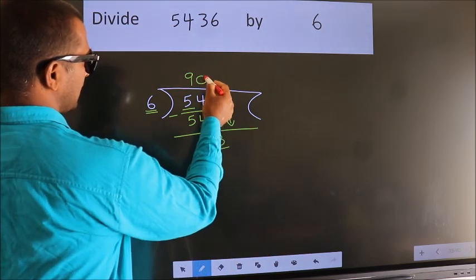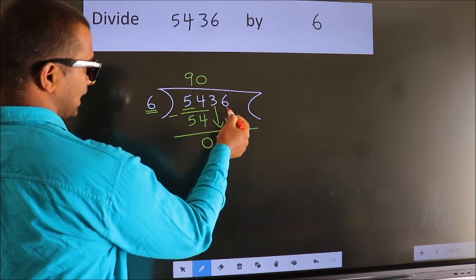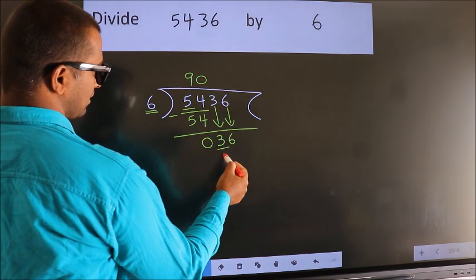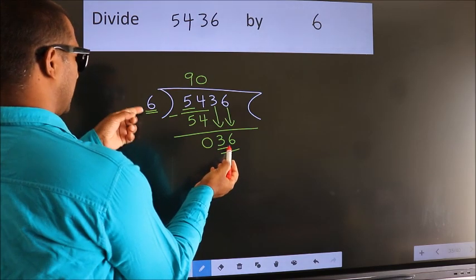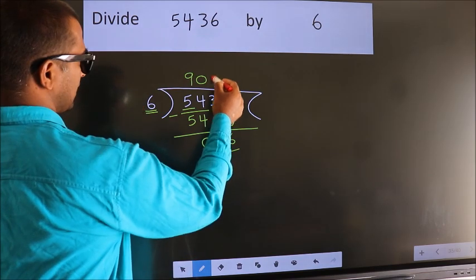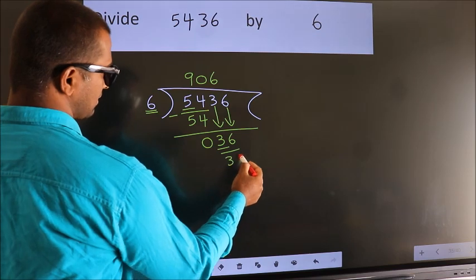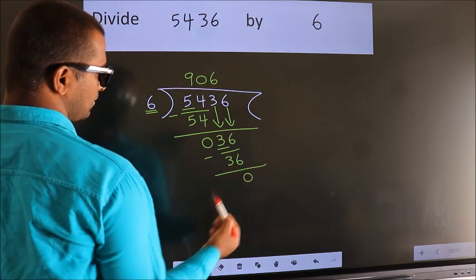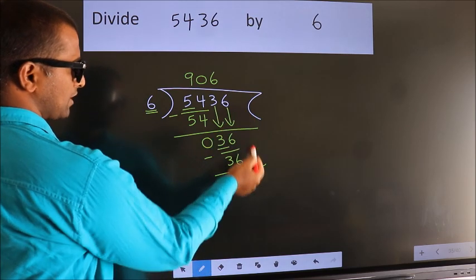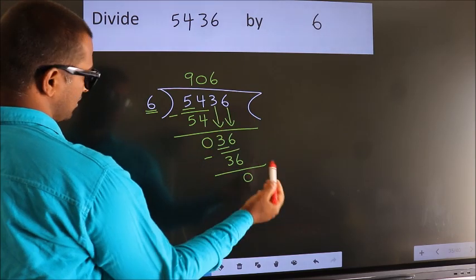Put 0 here, then only we can bring down this number. So 36. When do we get 36 in the sixth table? 6 sixes is 36. Now we subtract, we get 0. No more numbers to bring down, so we stop.